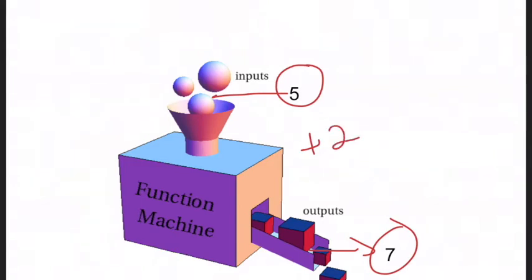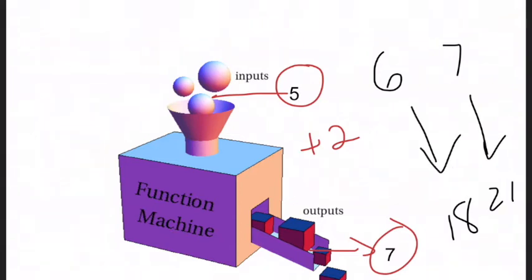So let's see a different one. If I put 6 in and the output is 18, you could say it's plus 12. That would be correct. But if I put another number in like 7 and get 21, you have to see the relationship there and the relationship is times 3.